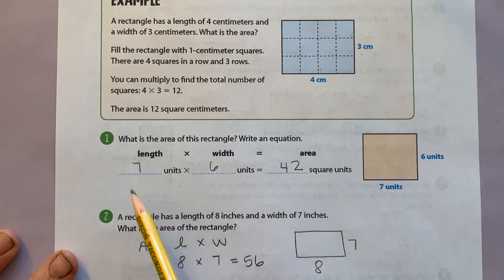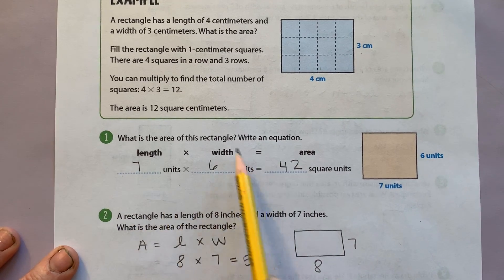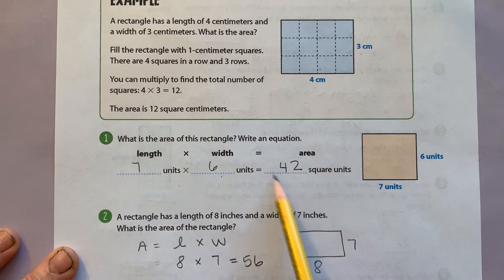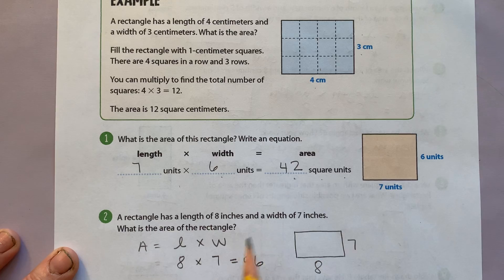Okay, in number 1, you should have found that the length is 7 and the width is 6 and had an answer of 42 square units.